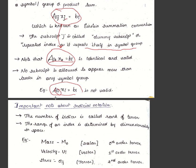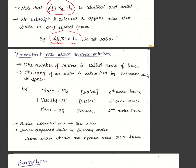The number of indices is called the rank of a tensor. The range of an index is determined by the dimensionality of space. A scalar like m has no index — it is a zeroth-order tensor with no direction. Velocity vi has one index, representing one direction, so it is a first-order tensor (vector). The magnitude is v and i indicates the direction.